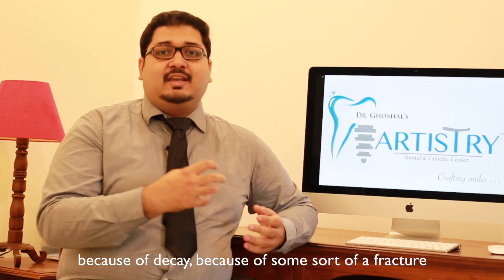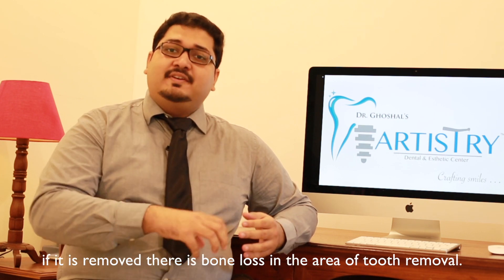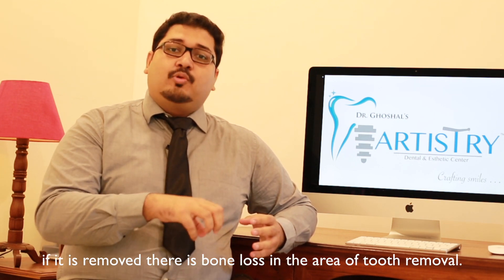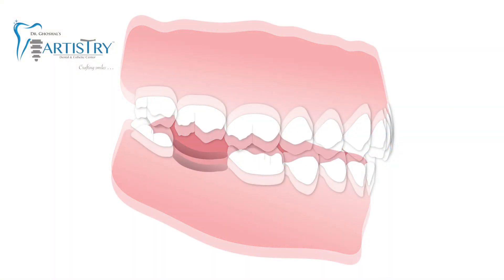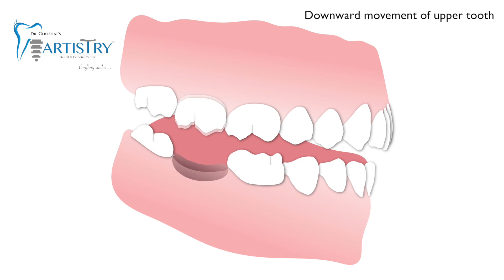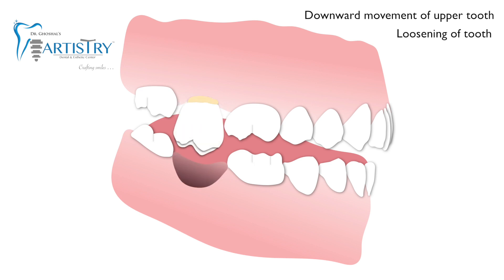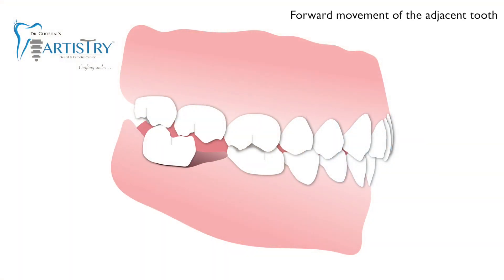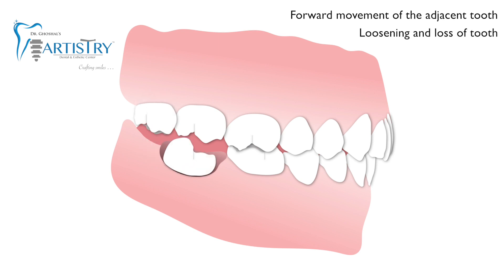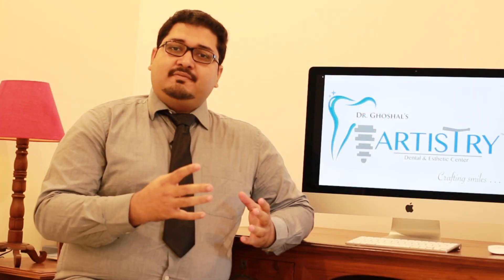When a tooth is removed, due to whatever reason — be it because of decay or some sort of fracture — there is bone loss in the area of the tooth removal. For instance, if the lower tooth is removed, the tooth on top tends to compensate for the loss by coming down, causing loosening of that upper tooth. Similarly, the tooth behind the region of the removed tooth tends to compensate by coming forward, leading to loss of the tooth in the back as well.